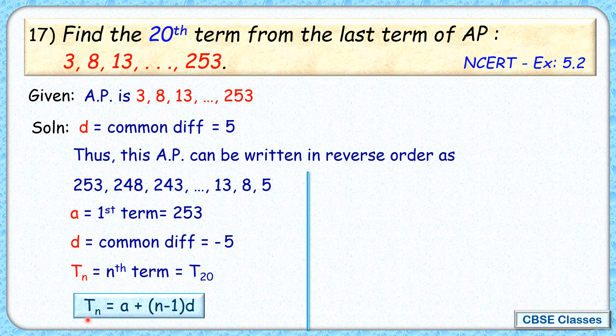So T₂₀ is a plus—a is your 253, n is 20, and d is minus 5. Solving it, we'll get T₂₀ as 253 minus 95, or 158. So this 20th term of this AP is what? It is the 20th term from the last of our original AP.